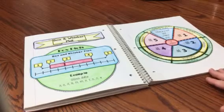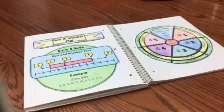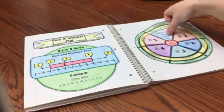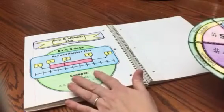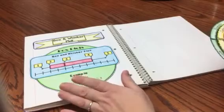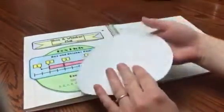If your students do not have interactive notebooks, there is another option. You can take your wheel foldable and glue your visual diagram of a box plot with the example on the back of your wheel foldable.